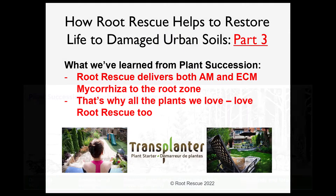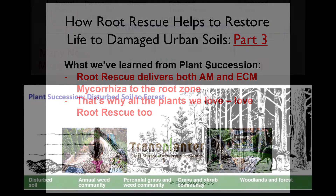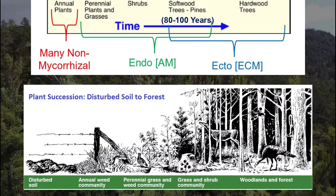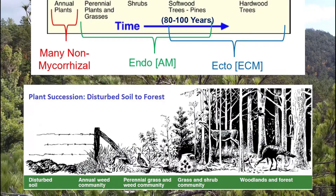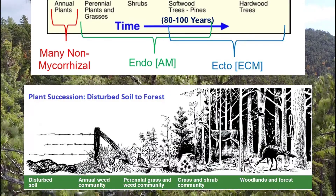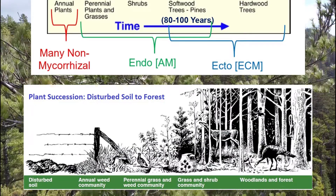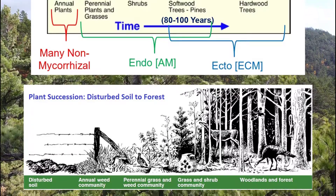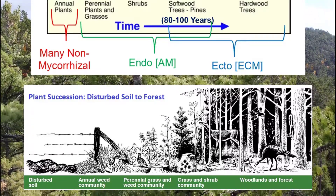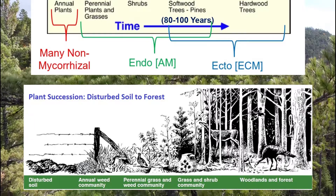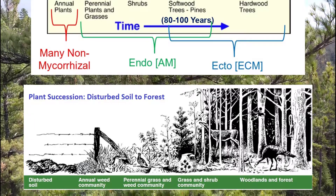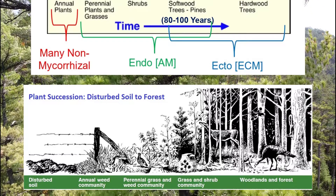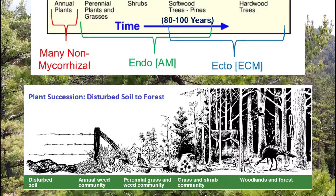Before we leave the plant succession chart behind, I'd like to draw your attention to what's going on below grade as the plants are changing above grade. The earliest plants in nature's march back to a forest, the pioneering annuals, don't require any help at all from mycorrhizal fungi. This makes complete sense because in the absence of mycorrhizal plants in the landscape, no mycorrhizal will be in the soil. After all, without a plant host, mycorrhizal simply perish.